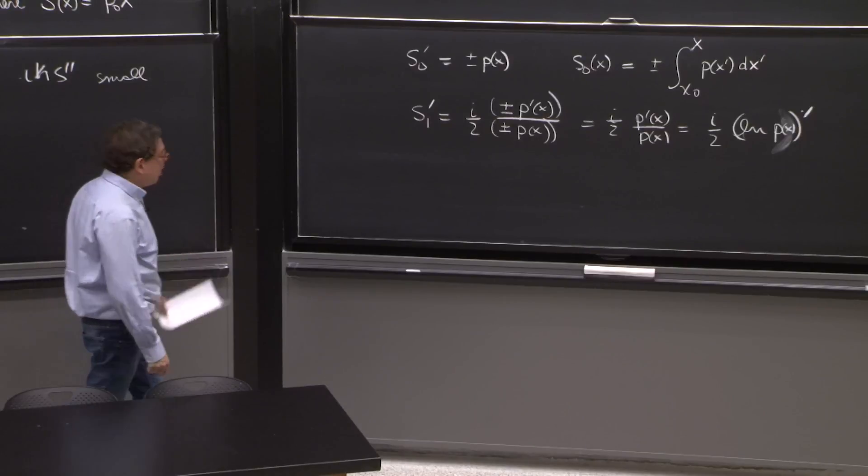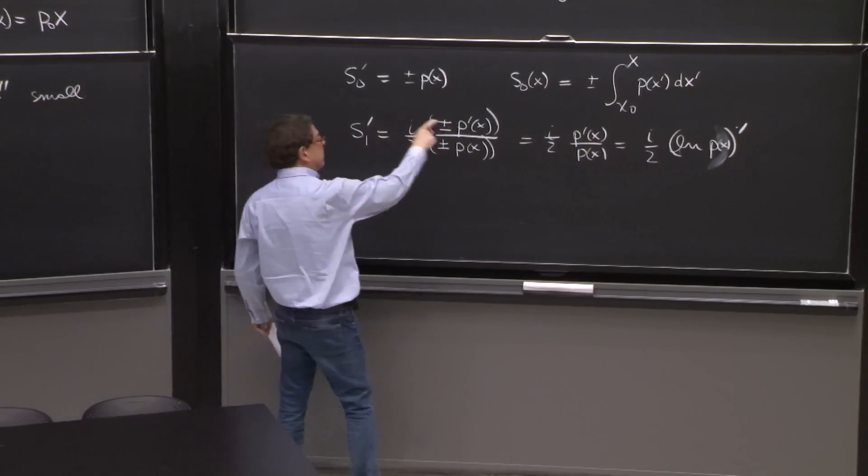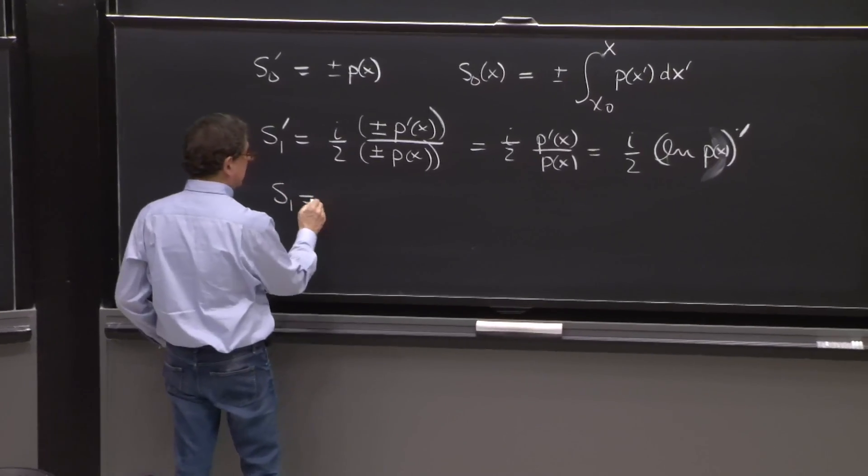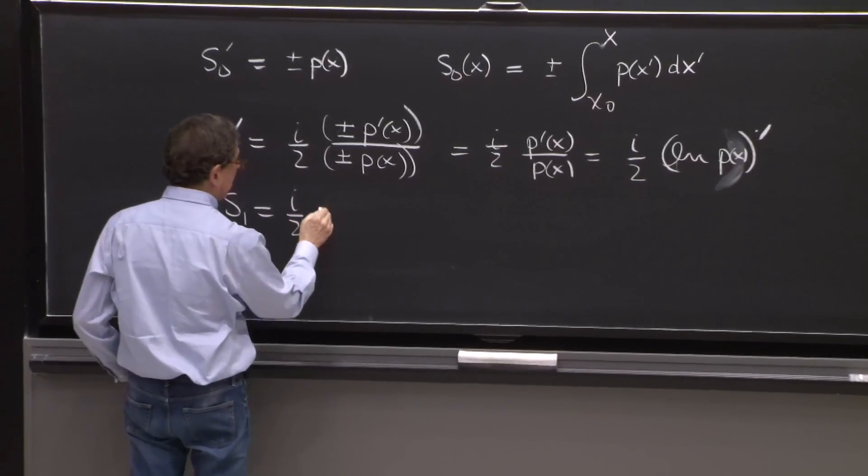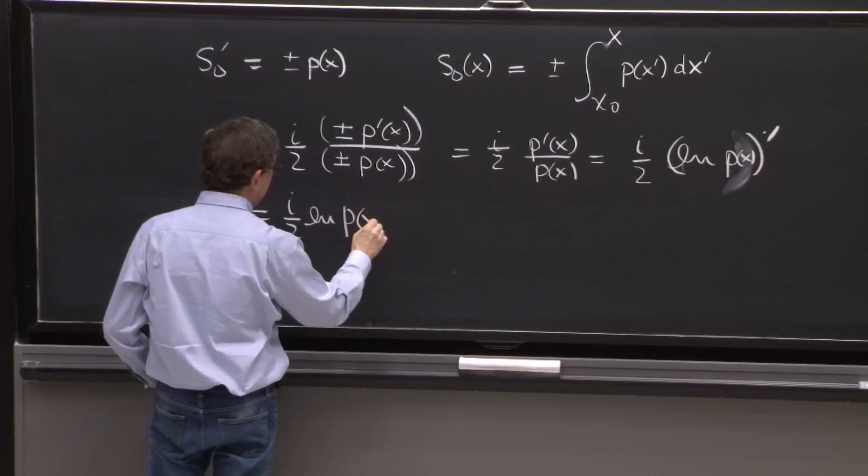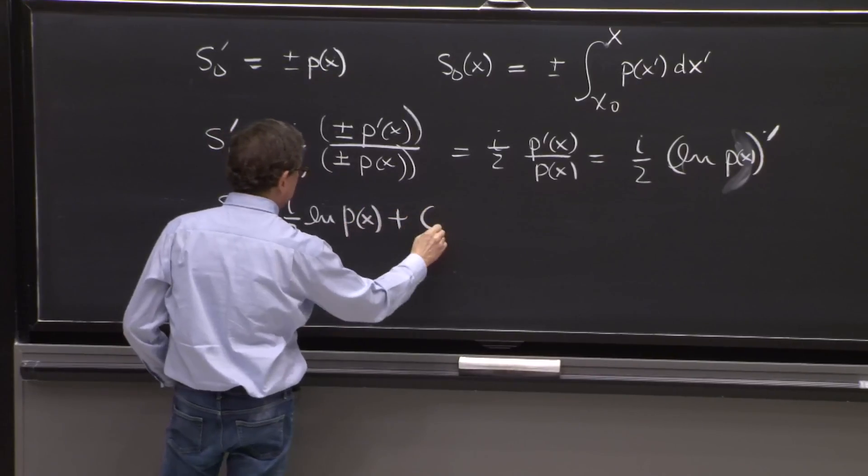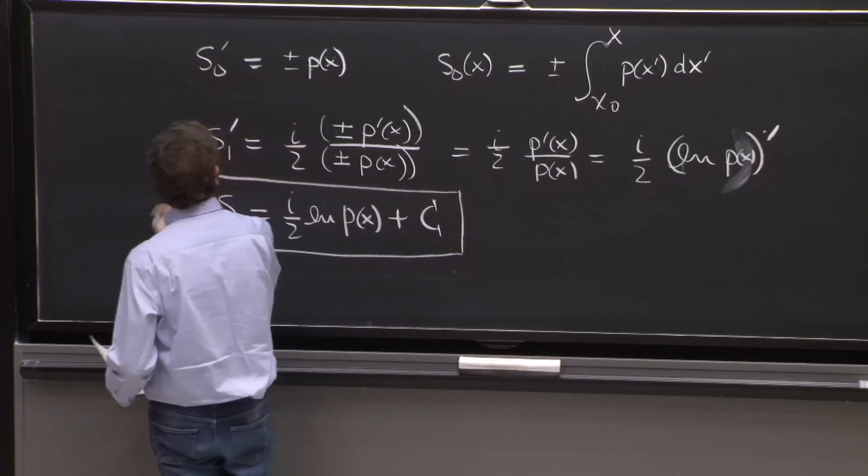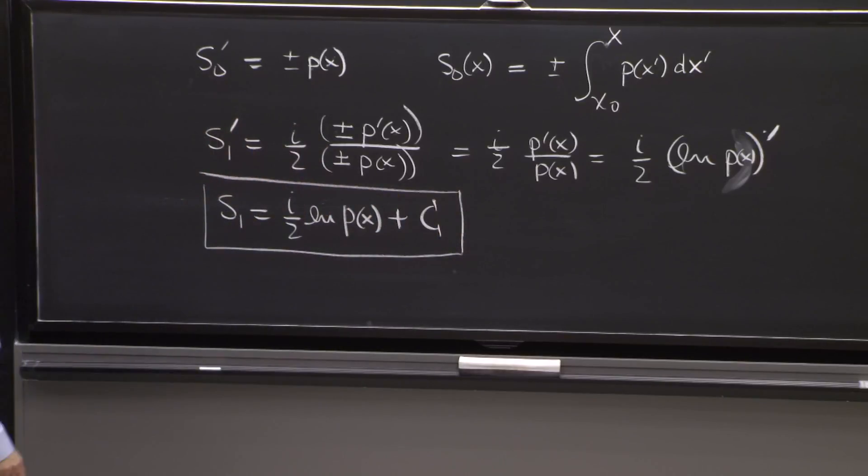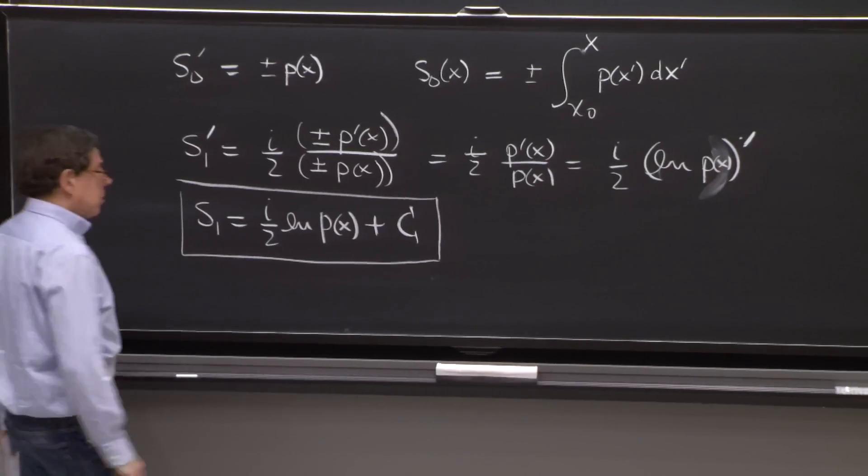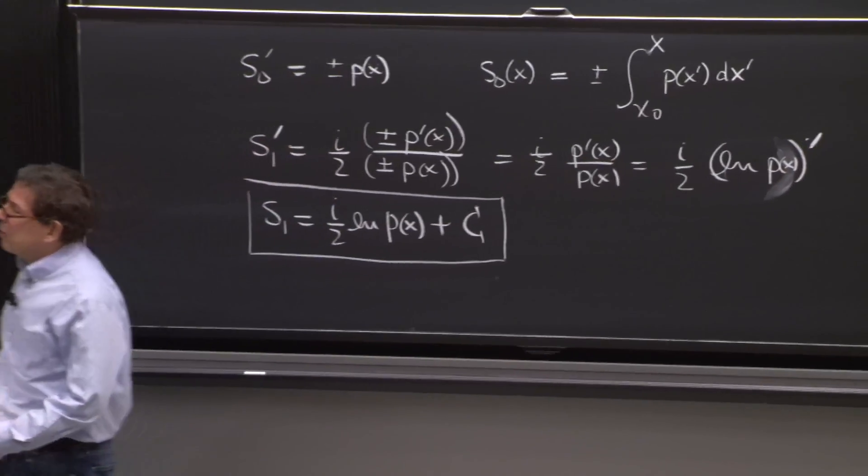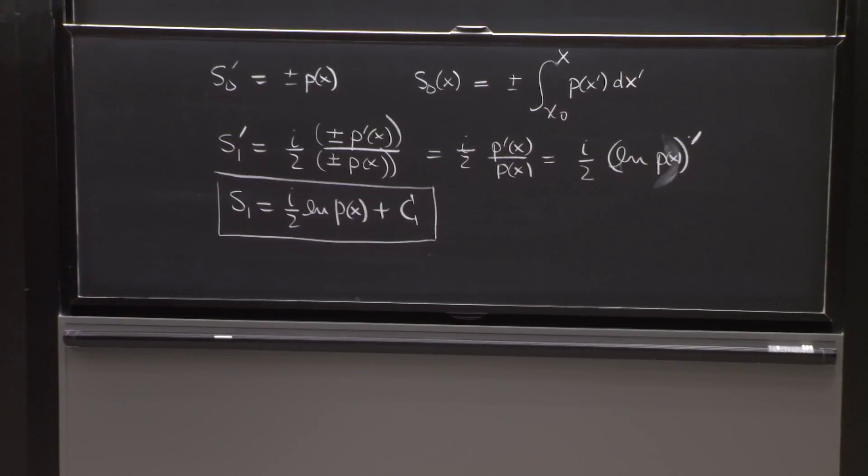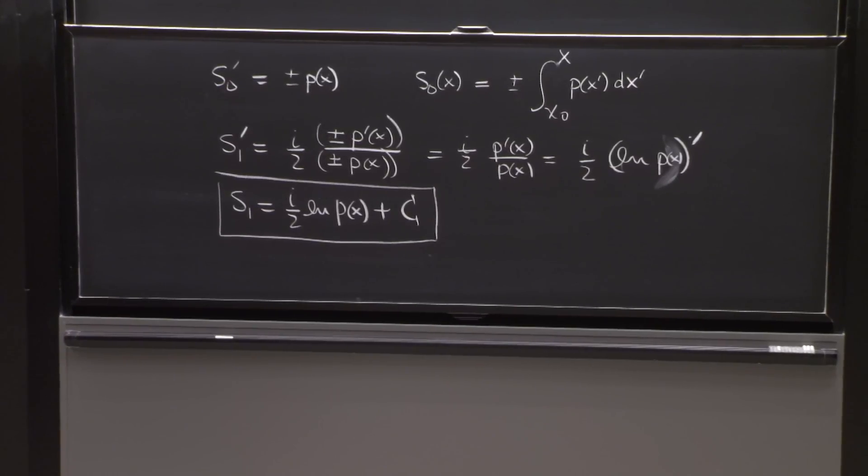So if s1, the prime derivative, is the derivative of this thing. So s1 is going to be i over 2 log of p of x plus a constant. So let's reconstruct our solution.